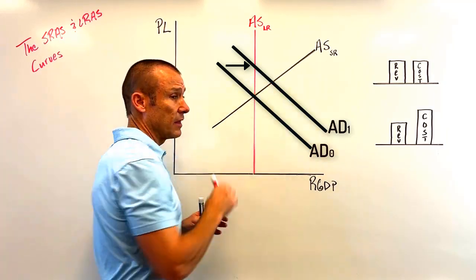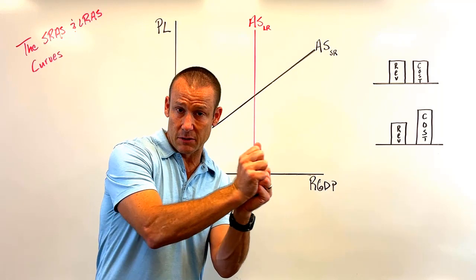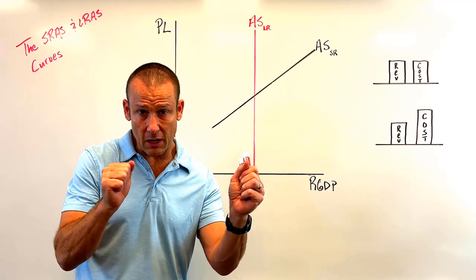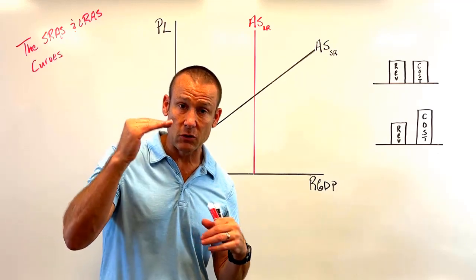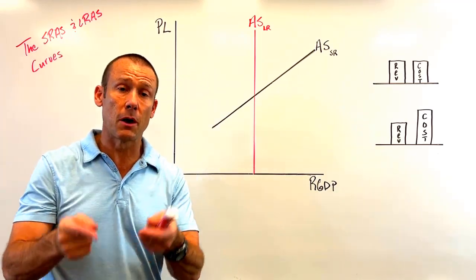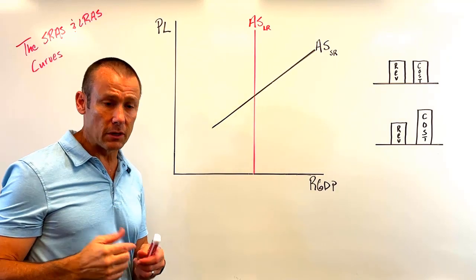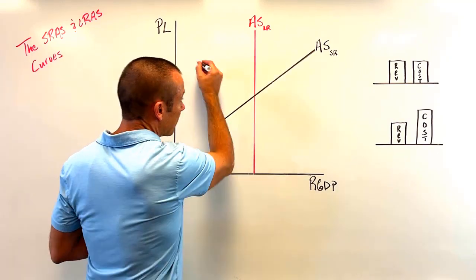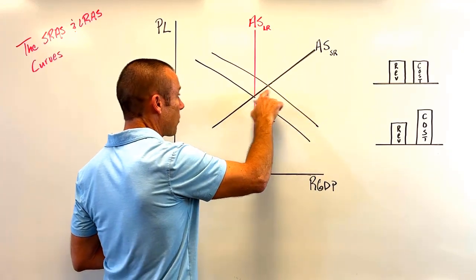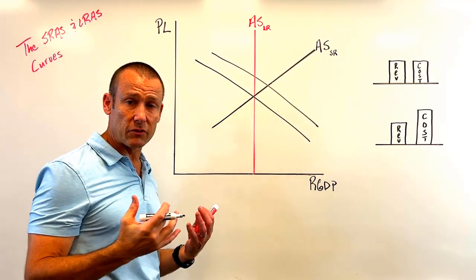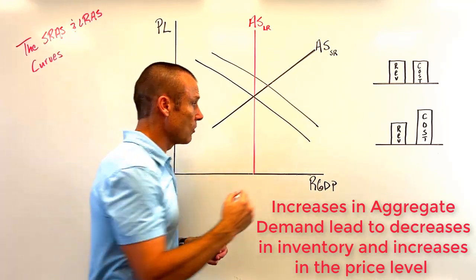That initial increase in aggregate demand means we're going to get this increase in total spending and demand for goods and services. Production is still going to be lagging behind at first, and we're going to see inventory start to drop, which puts upward pressure on the price level. So here's AD sub zero, AD sub one — the curve has shifted to the right, and that has caused the price level to go up because of those inventories going down, those short-term shortages.